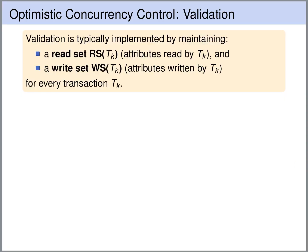In optimistic concurrency control, validation is typically implemented by maintaining a read set and a write set for each transaction. The read set records what objects have been read by the transaction, and the write set records what objects have been written by the transaction.